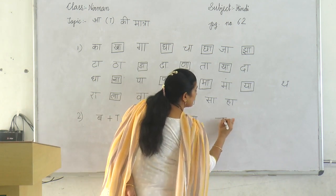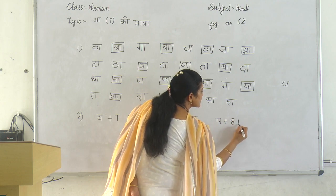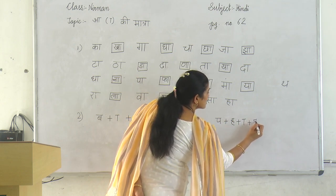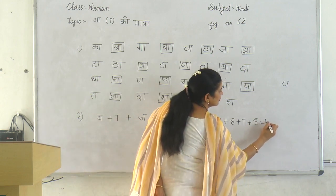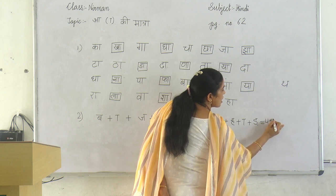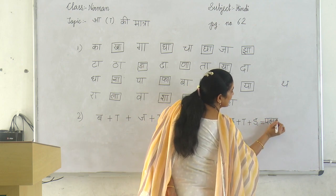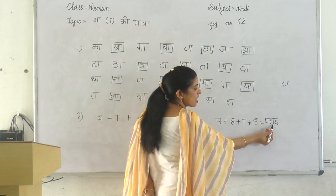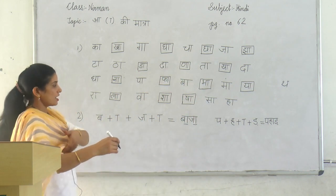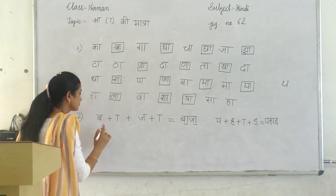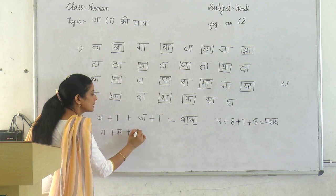This side: pa plus ha plus A ki matra plus a. So now we will make the word. First write pa, then ha, then A ki matra, and the last one is a — do downside, sleeping line. Read this: pa, ha, r — pahar. Pahar.